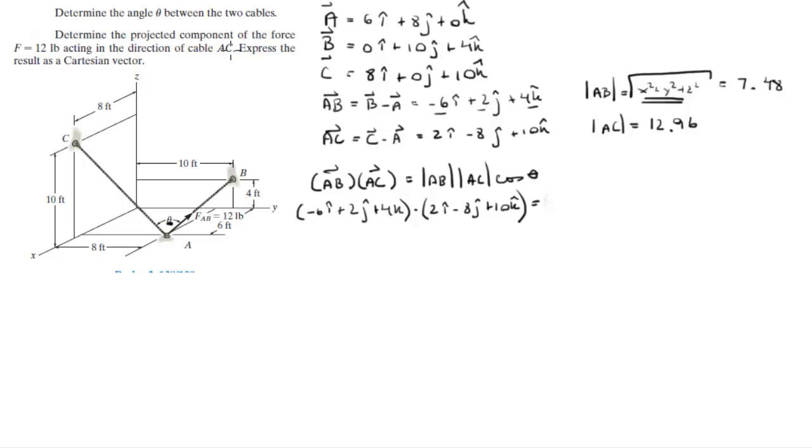The magnitude of AB which is 7.48 times the magnitude of AC which is 12.96 times the cosine of theta.